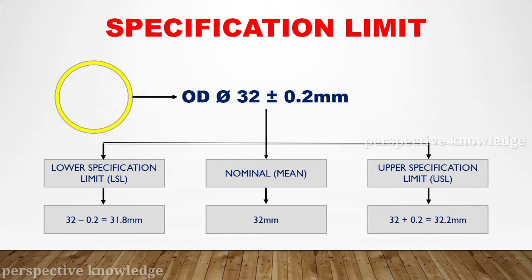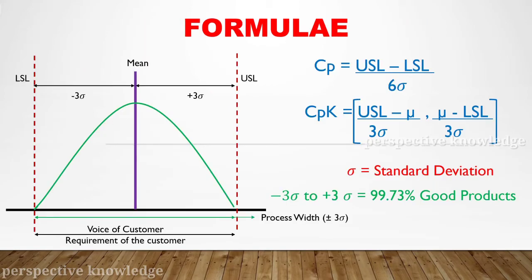32 is the nominal value, which is the mean value. CP is calculated as the specification width — USL minus LSL — divided by 6 sigma, where 6 sigma is the process width or process spread. The formula for CPK is: USL minus mean value divided by 3 sigma, and mean minus LSL divided by 3 sigma. CPK is the minimum of these two values.